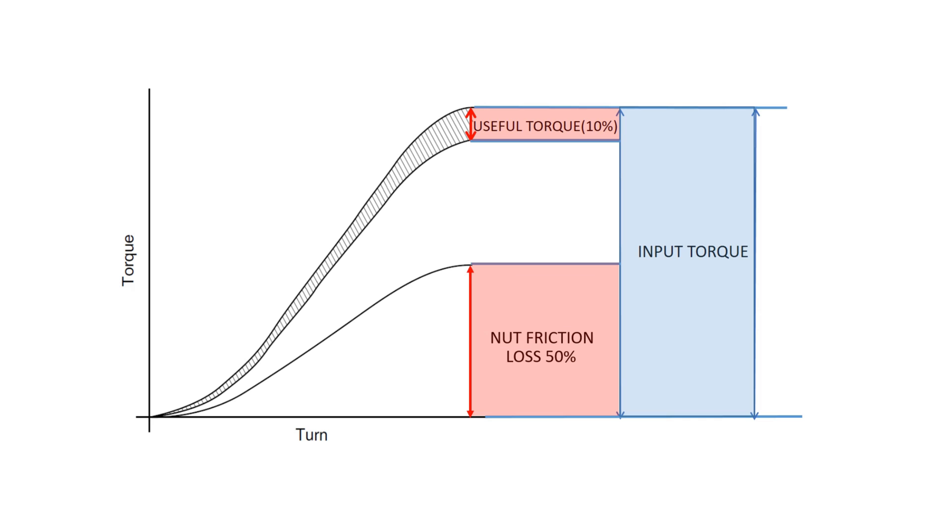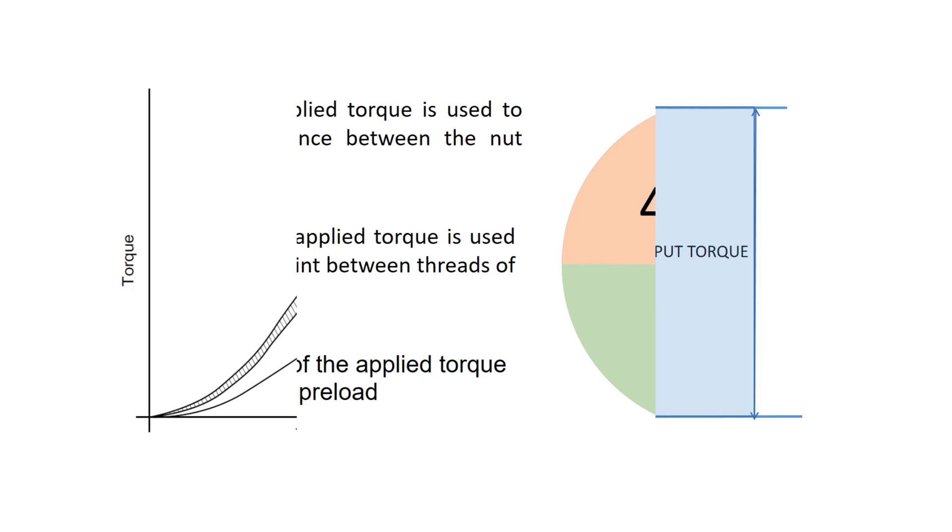About 50% of the applied torque is used to counter frictional resistance between nut and the washer, or we can say nut and the joint. And remaining 40% of the applied torque is used to counter frictional resistance between threads of nut and bolt.